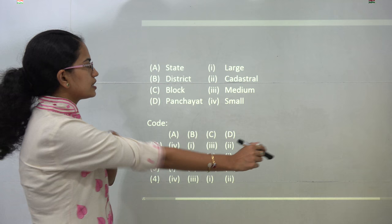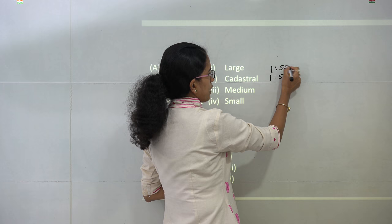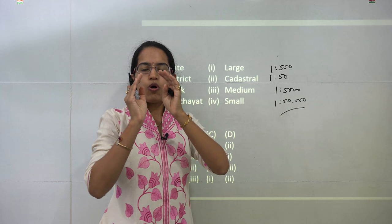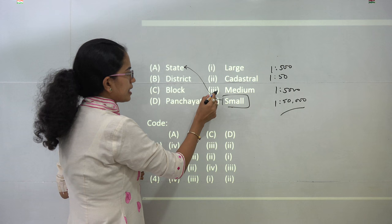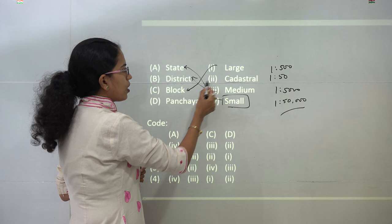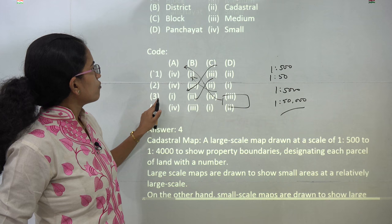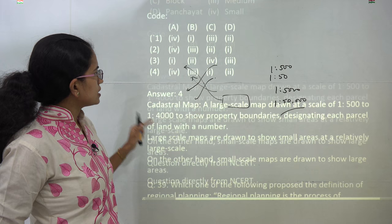You have to match the size of the map with the type of map it can represent. Cadastral is a very large-scale map — for instance 1:50 up to 1:50,000 as examples. A small-scale map represents the whole of India on a sheet of paper. Small-scale maps depict the state, medium-scale maps depict the district, large-scale maps depict the block, and finally cadastral maps depict the panchayat. This is directly from NCERT, and 4 is the correct choice.